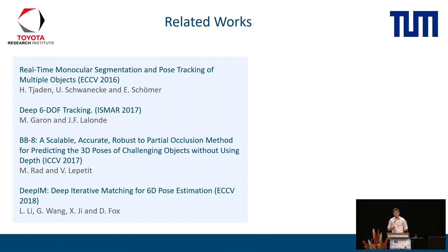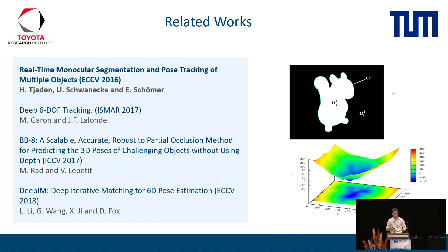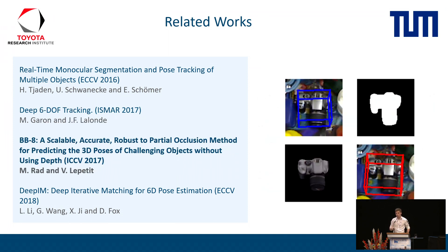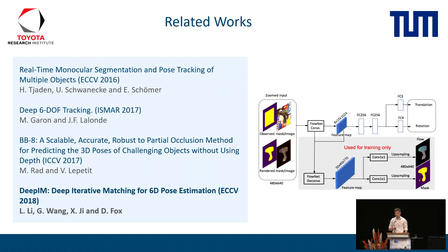There are several papers which address the problem of 6D pose refinement or tracking. While the first one is an optimization procedure using color foreground separation, the other three works are grounded on learning. Similar to us, they all feed a rendering and a scene cutout to a network in order to regress a 6D pose update. Deep 6D Tracking by Garon and Lalonde is the only one that also uses depth besides RGB to minimize the mean square error in rotation and translation. BB8 by Rad and Lepetit added an optional stage to their detector where they minimize the 3D bounding box projection error. Deep IM, presented here last Tuesday, minimizes the average distance of 3D model points between the prediction and the ground truth pose.